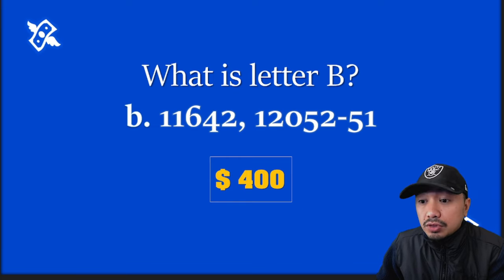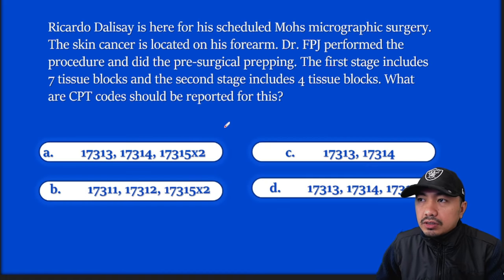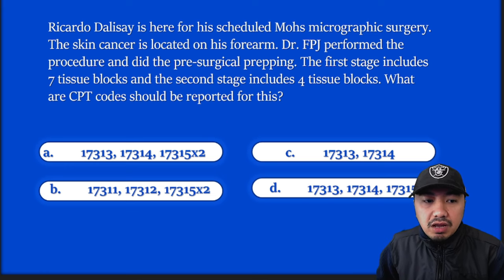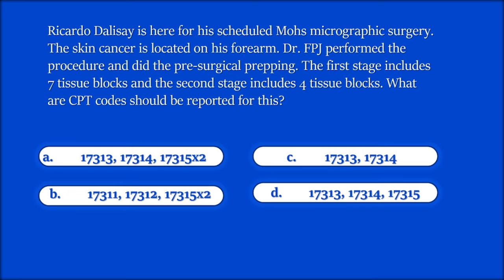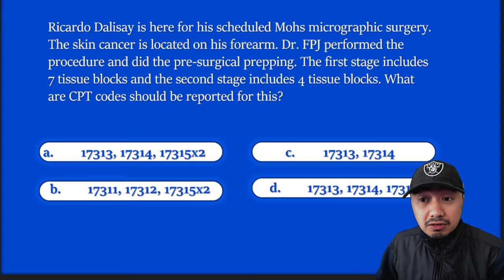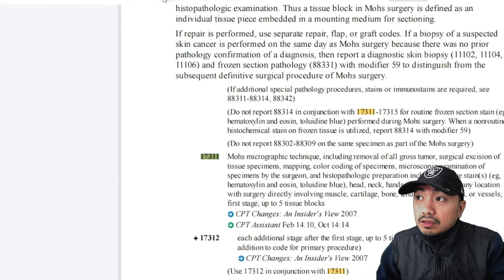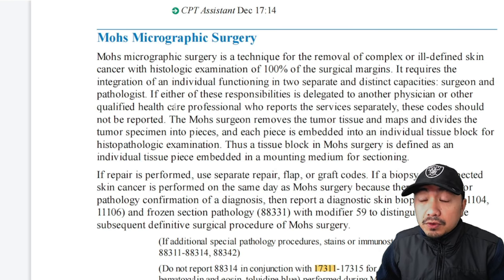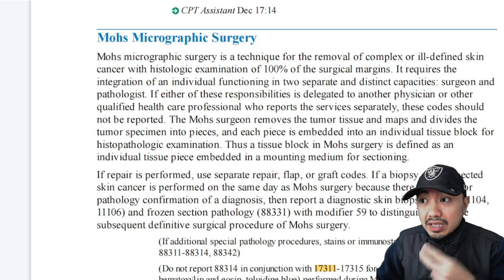We'll now proceed to the $600 question. Ricardo Delisa is here for a scheduled Mohs micrographic surgery. The skin cancer is located on his forearm. Dr. FPJ performed the procedure and did the pre-surgical prepping. The first stage includes seven tissue blocks and the second stage includes four tissue blocks. What CPT codes should be reported? For Mohs micrographic surgery, go to the 17311 code set. There are three steps: check the site, check the number of stages, and check the tissue blocks per stage.